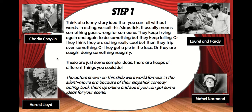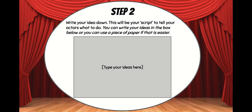The way slapstick works is that something will normally go wrong for someone. They keep trying again and again to do something but they keep failing. Or they think they're acting really cool but then they trip over something, or they get a pie in the face, or they are caught doing something naughty. There are so many more ideas you could use at home. Once you've worked that out, I want you to write down your idea in this box. You can type into that box, or you can write your ideas down on a piece of paper and then insert a photo onto that slide.